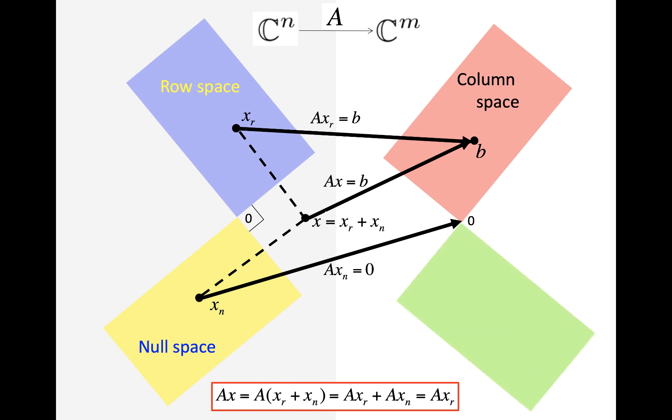Now in addition to that, we have one more subspace, and that is the left null space, which is the set of all vectors that are orthogonal to the column space. And as a matter of fact, all vectors that are orthogonal to the column space are in the left null space, and all of the vectors that are orthogonal to the left null space are in the column space.